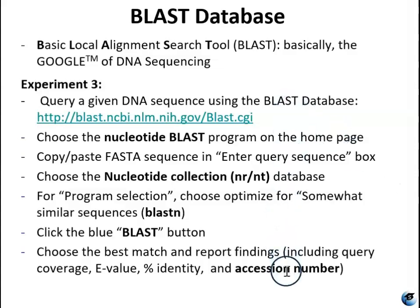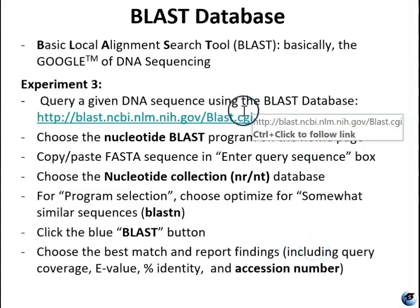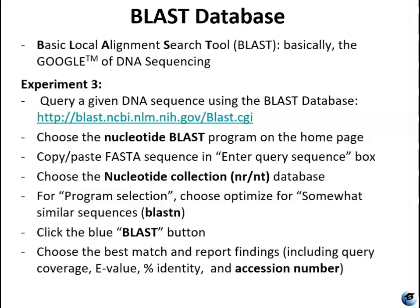Here are the steps. You're going to go to the website and choose the nucleotide BLAST program on the homepage. You'll copy and paste your DNA sequence into the enter query sequence box, choose the nucleotide collection database, optimize your program selection for BLAST N (N for nucleotide), click the BLAST button, and then choose the best match and report your findings. You're taking a sequence from an unknown species, plugging it into this database to see if you can find a known species that matches your sequence to identify it. BLAST is a huge database that has been used by scientists all over the world since 1990 — so if it's not in there, you might have a new species.